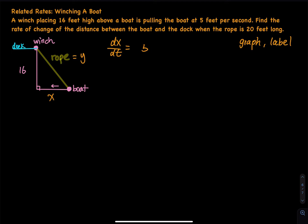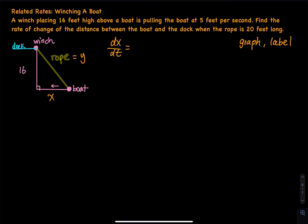Instead of writing 5 feet per second, let me ask: is dx/dt positive 5 or negative 5? Is the distance between the boat and the dock increasing or decreasing? Since you are moving toward the dock, the distance is decreasing. As a result, dx/dt equals negative 5, not positive 5. If you were driving away from the dock, then dx/dt would be positive 5.